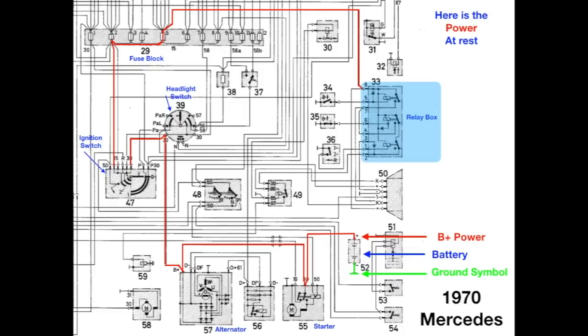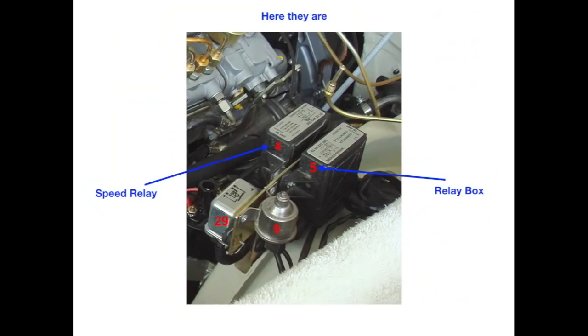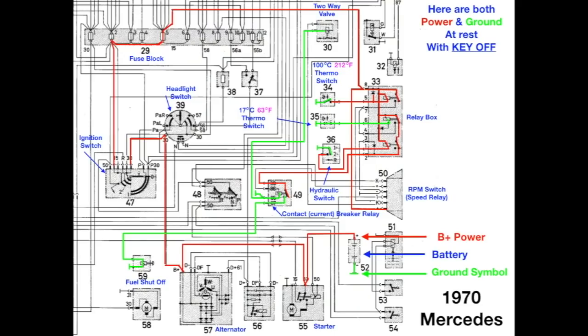I'm not going to include the internals of the relay box at this point. We'll get to that in just a few minutes. So, it comes in on pin eight, and it goes also down to the speed relay, sometimes called the RPM switch. That is what is called the emission control system. And, the control is basically these two things, the relay box and the speed relay. And, here's where they are. They're mounted right where the rest of the other ones are, the speed relay and the relay box. Here are both power and ground at rest, and the key is off, and everything is colored at rest.